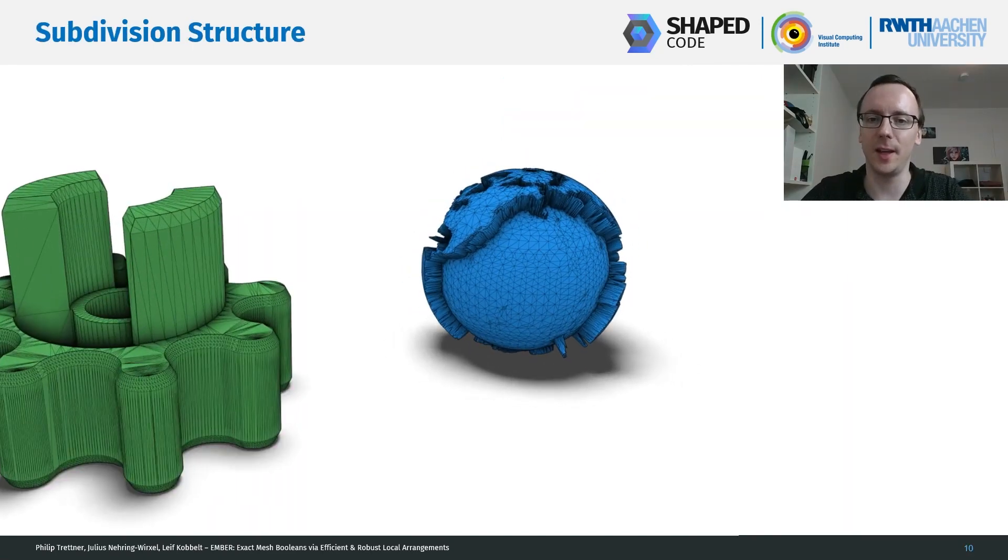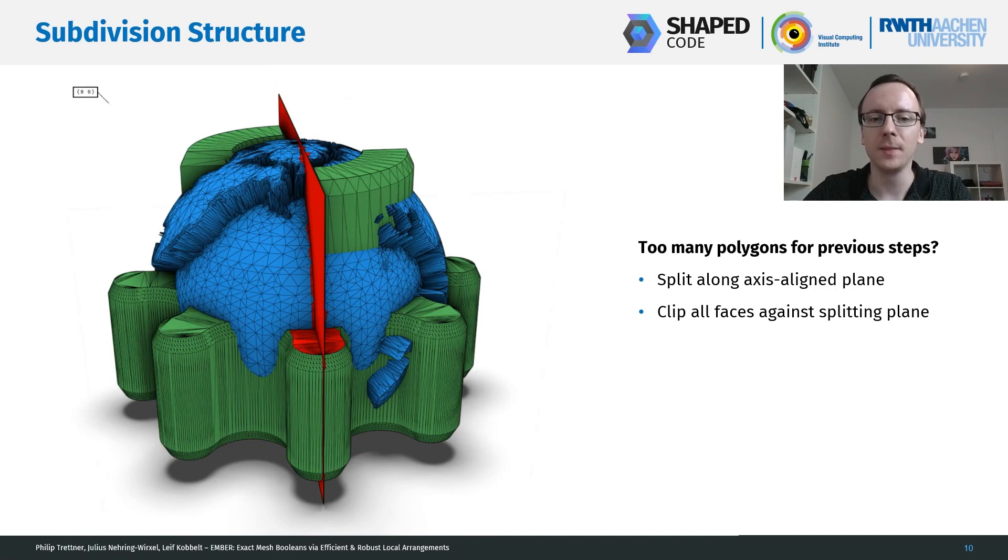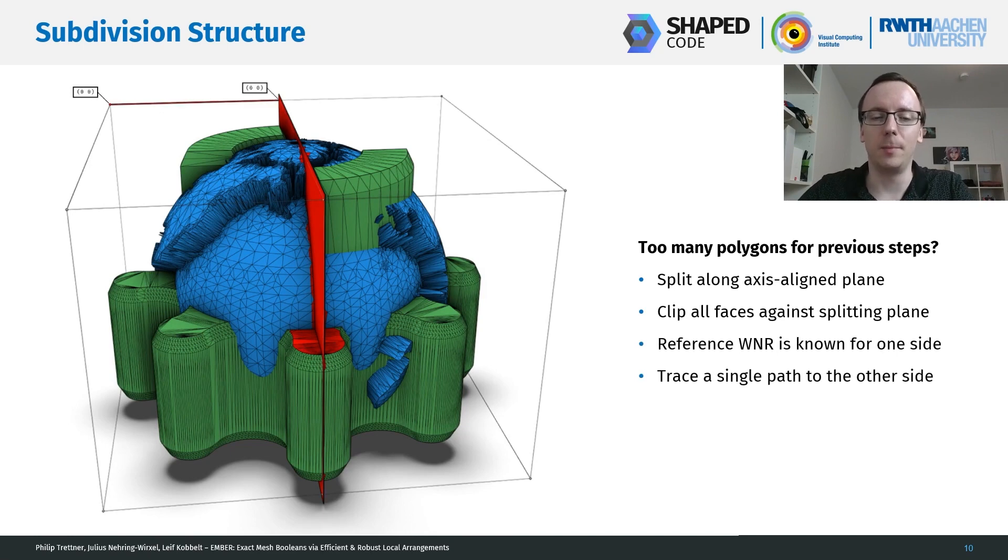These previous steps do not scale well with large meshes. In order to stay efficient, we employ a subdivision tactic. So if there are too many polygons, we want to split the problem into sub-problems. For this, we choose an axis-aligned plane and split all triangles and polygons across this plane. For the classification, we also need a reference winding number. So here, we already have a reference winding number for one sub-problem and then do a single segment trace to get the second number.